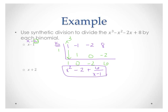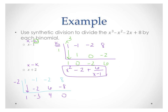For the other binomial, write coefficients: 1, negative 1, negative 2, 8. This time, what is k? k is negative 2, because if this is x minus k, k has to be negative 2. Drop, multiply, add, multiply, add, multiply, add. This time we have a remainder of 0, which means it divides evenly with no remainder. Remember this was an x cubed, so we get x squared minus 3x plus 4.